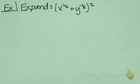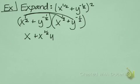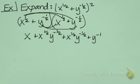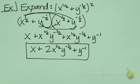Last example: expand x to the 1 half plus y to the negative 1 half, quantity squared. So we'll write it out. x to the 1 half times x to the 1 half is x. x to the 1 half times y to the negative 1 half. Then x to the 1 half times y to the negative 1 half again, and y to the negative 1 half times y to the negative 1 half is y to the negative 1 power. We combine those two middle terms, so we get x plus 2x to the 1 half, y to the negative 1 half, plus y to the negative 1 power.